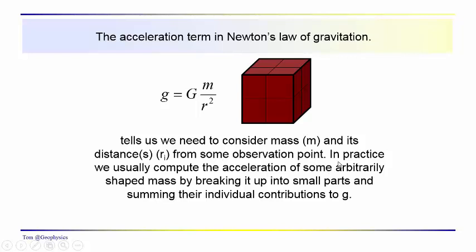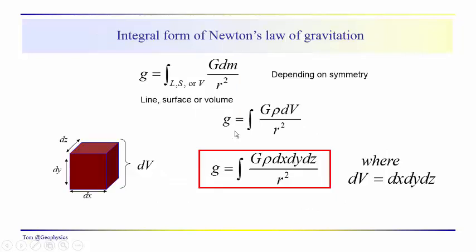So at any rate, we usually calculate the acceleration of some arbitrarily shaped object like this cube by breaking it up into small parts and summing their individual contributions together. Parts that are small enough so that we can treat them as points. And then when we do that, we have this integral form of Newton's law of gravitation. This could be a line integral, a surface integral, a volume integral. The acceleration due to gravity then would be an integration along a line, surface, or volume. We've got this gravitational constant, and the object depends on how we slice it and dice it. This differential element of mass here. We usually do that depending on its symmetry. So the symmetry of the object usually determines whether the integration is a line integral, surface, or volume integral.